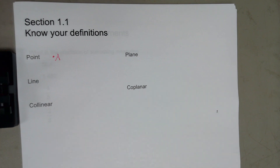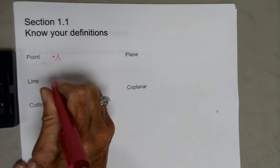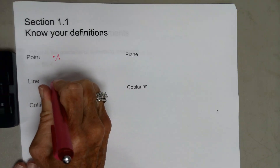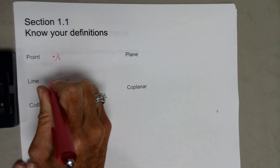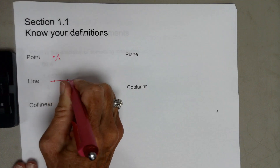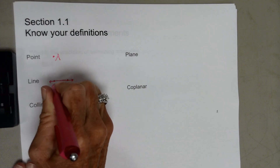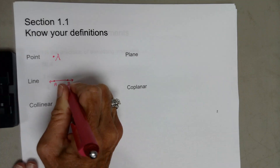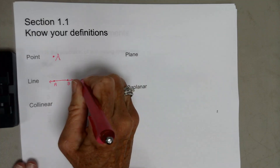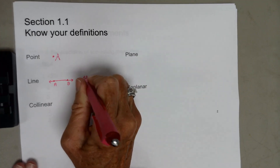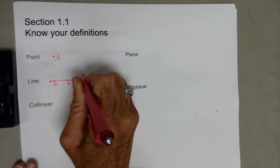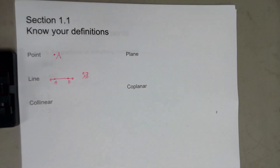A line is made up of points extending in opposite directions forever and ever — so that would be your definition of it. Your illustration might look something like this. You're going to put two points there, name them, and you're going to call this line AB or line BA.